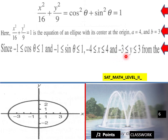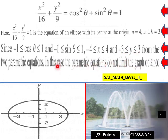-4 ≤ X ≤ 4 and -3 ≤ Y ≤ 3 from the two parametric equations. So this gives us our example here that we move over into this actual situation.